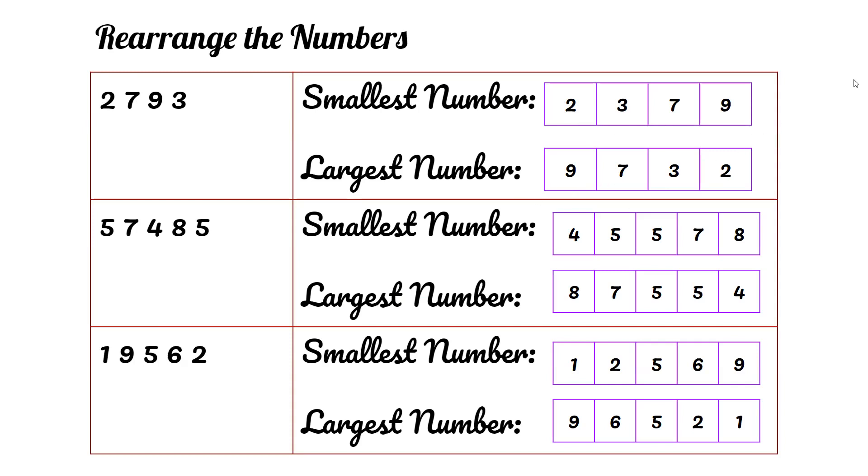Largest number is 9, then 7, then 3, then 2. So the largest number is 9,732.